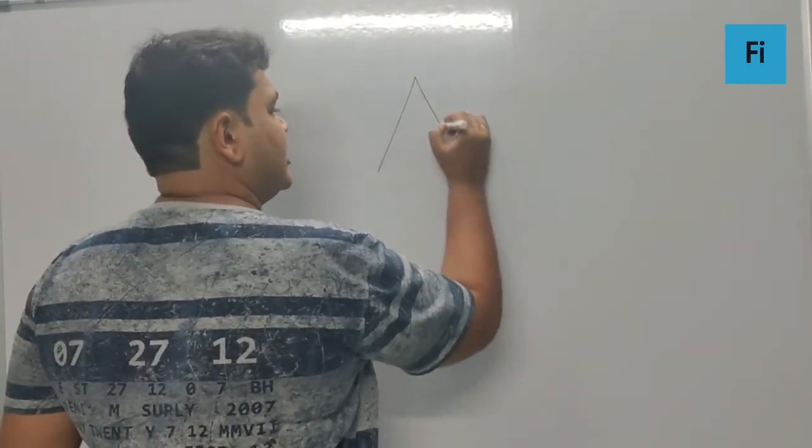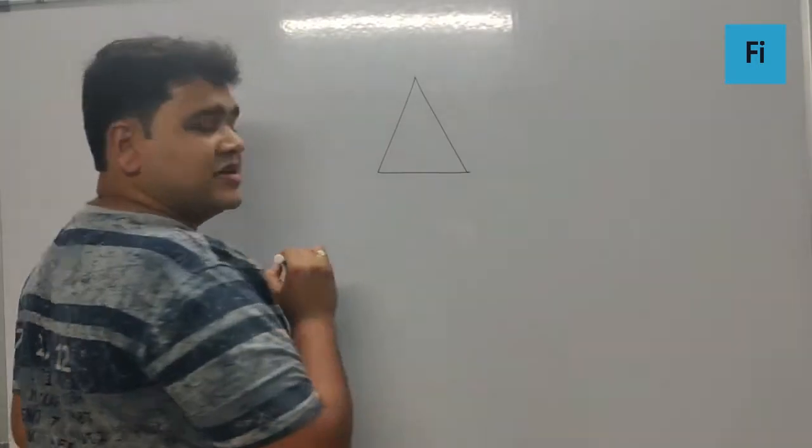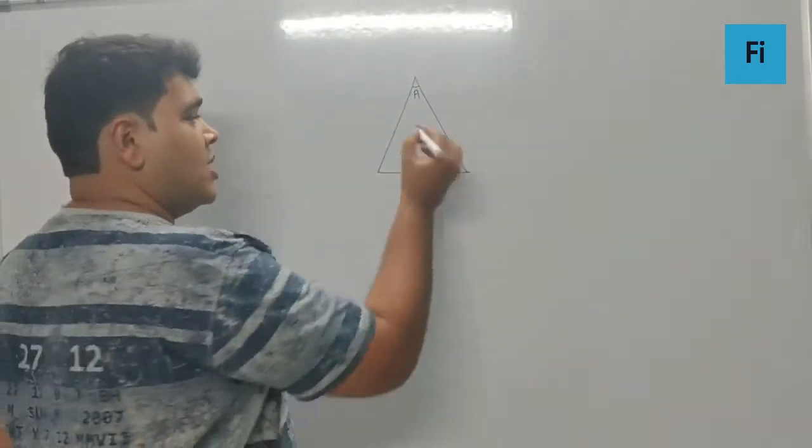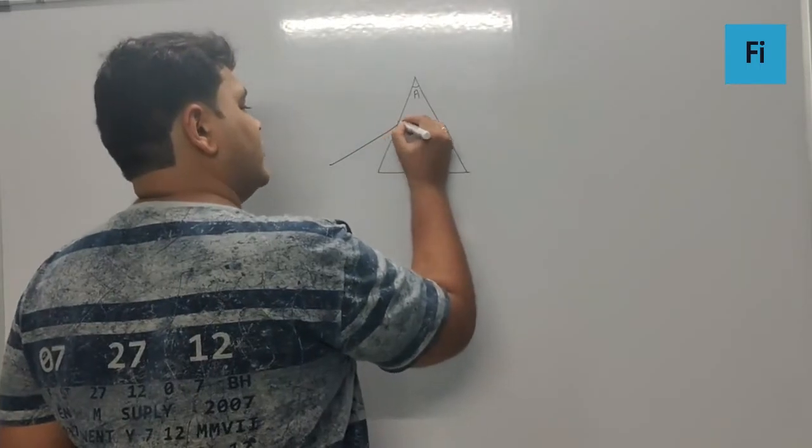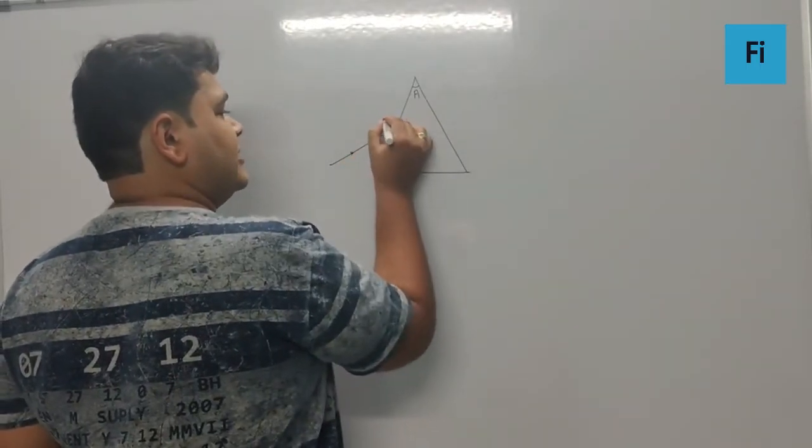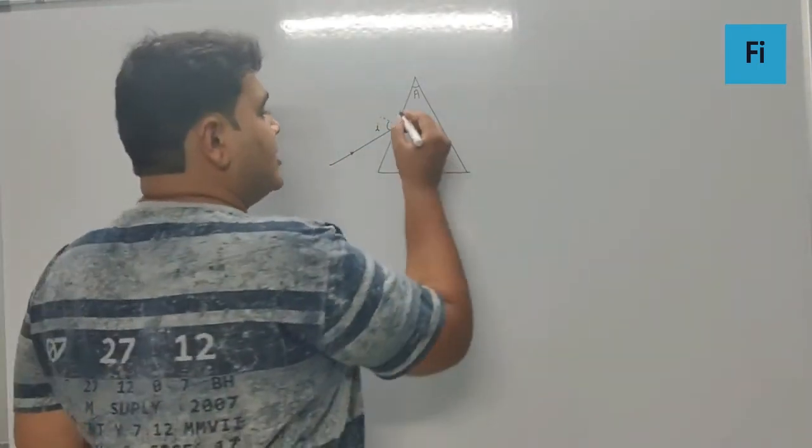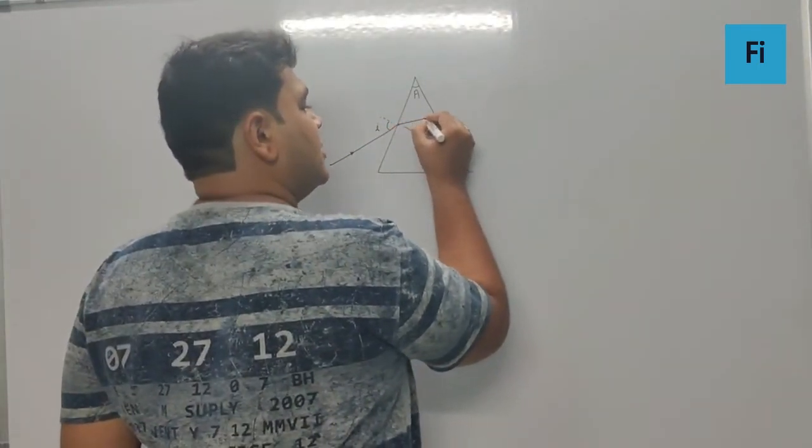Guys, they need to say that this is the prism for which the angle of prism is A. Now whatever the light is coming over here, the incident light is having an angle of incidence i. Now here the angle becomes r₁, I hope you understand that.